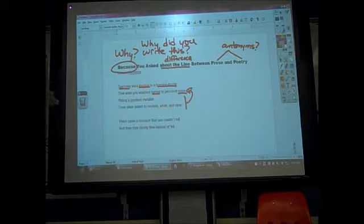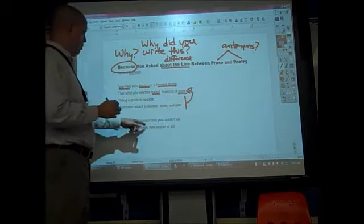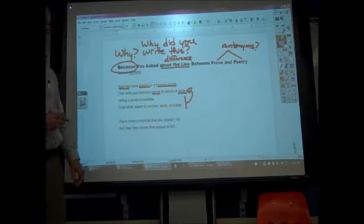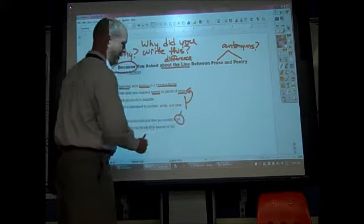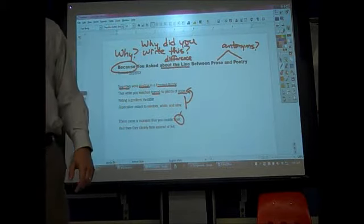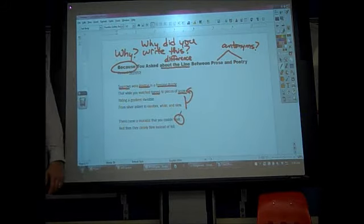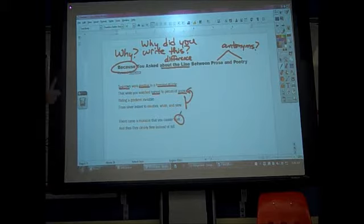Then I get the second stanza. There came a moment that you couldn't tell, and then they clearly flew instead of fell. Now right away I'm wondering a number of things. First of all, it says there came a moment that you couldn't tell, and I'm immediately wondering, tell? What do you mean tell? Tell what? Tell a story? Tell a joke? Tell a secret? None of those seem to make sense.